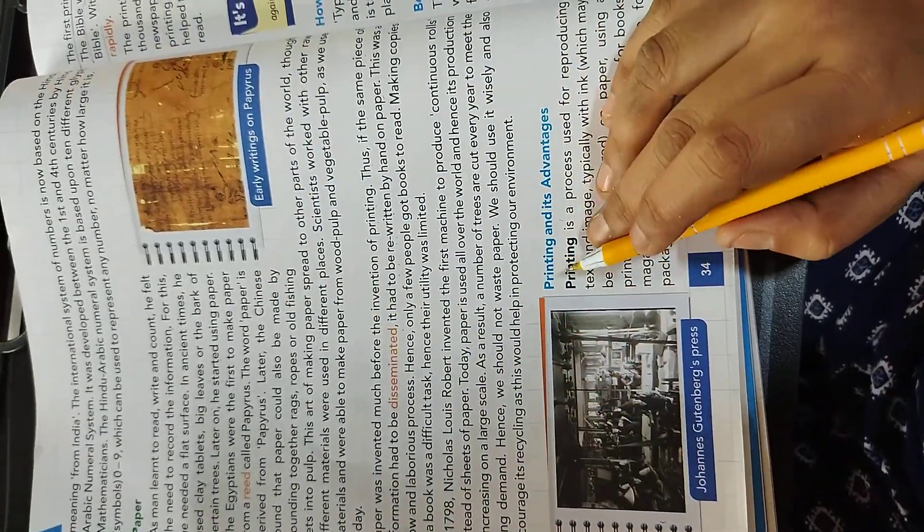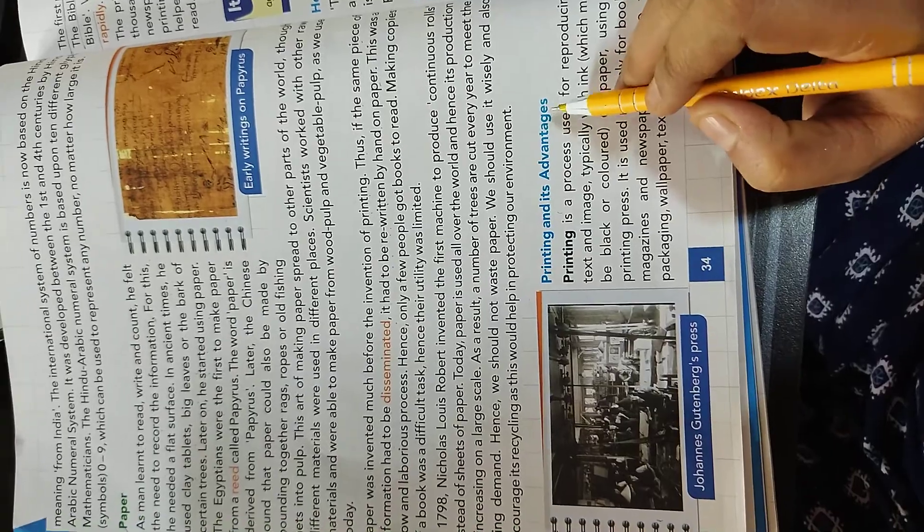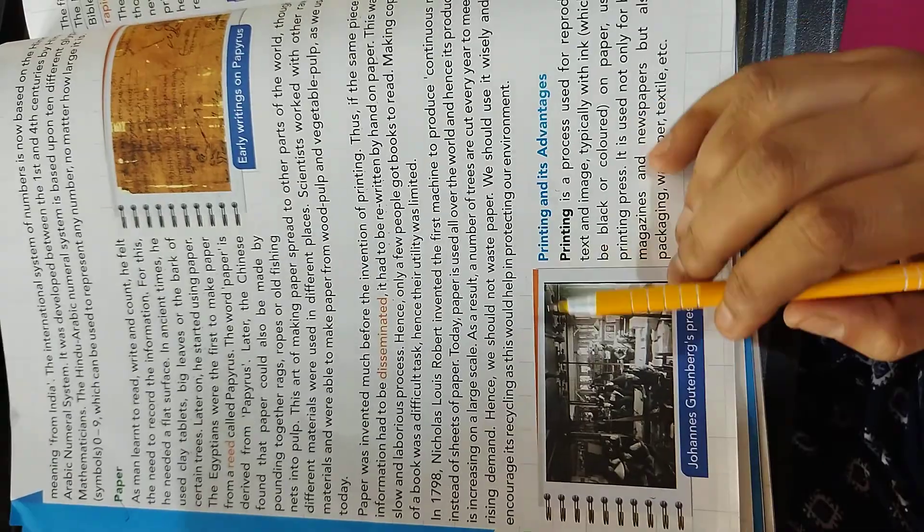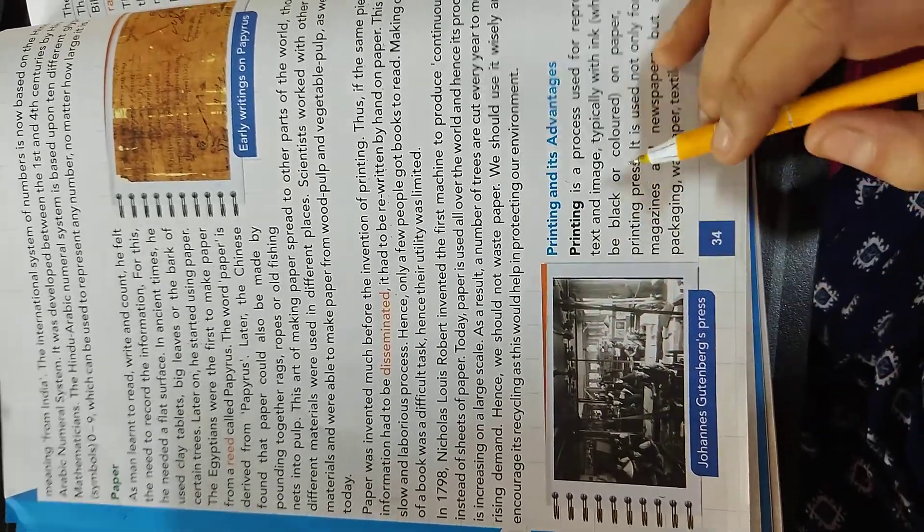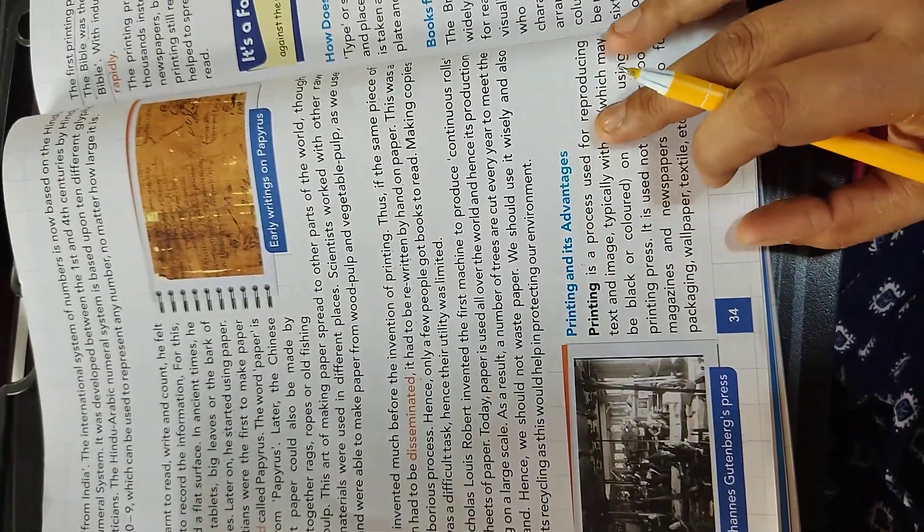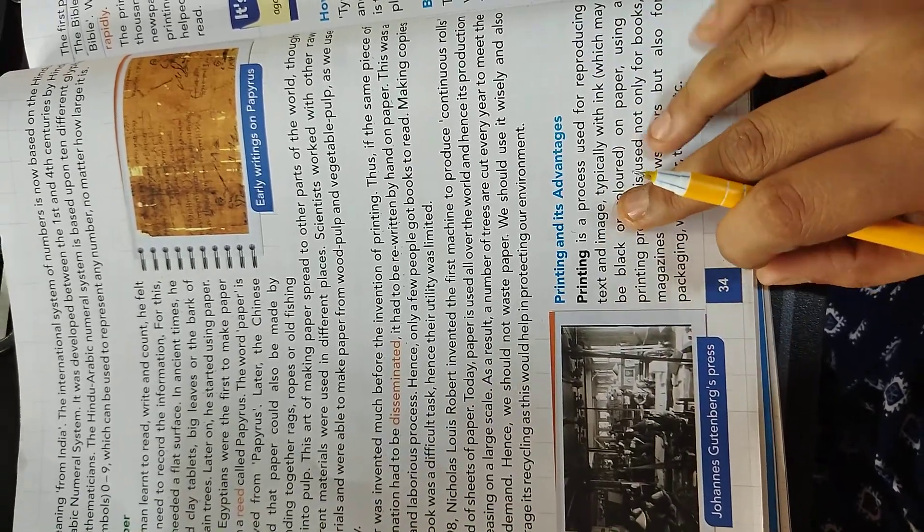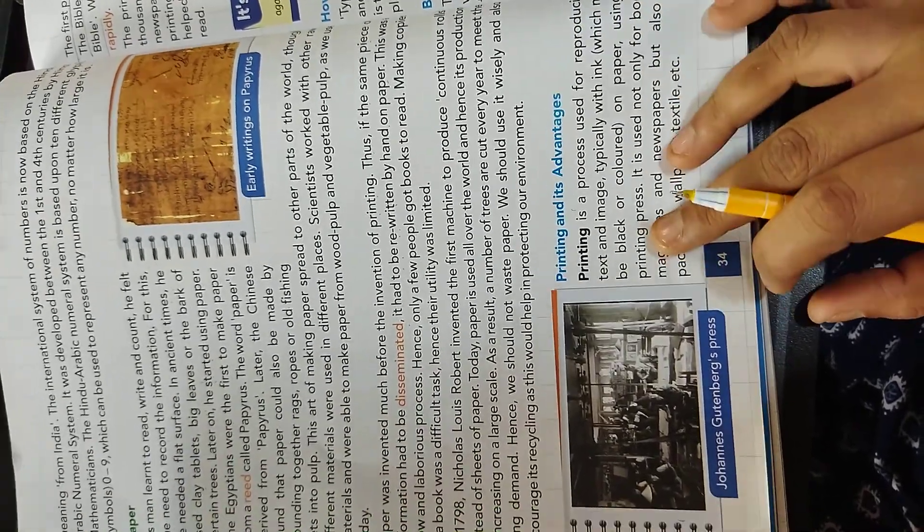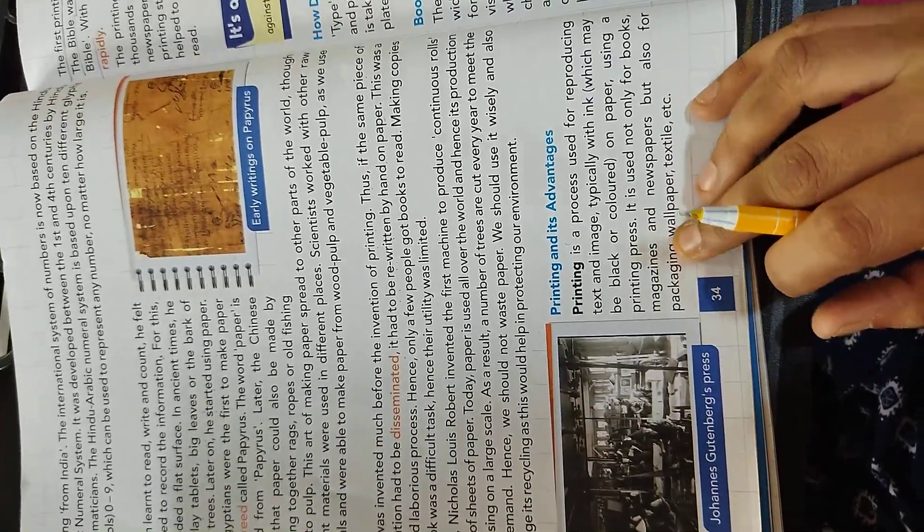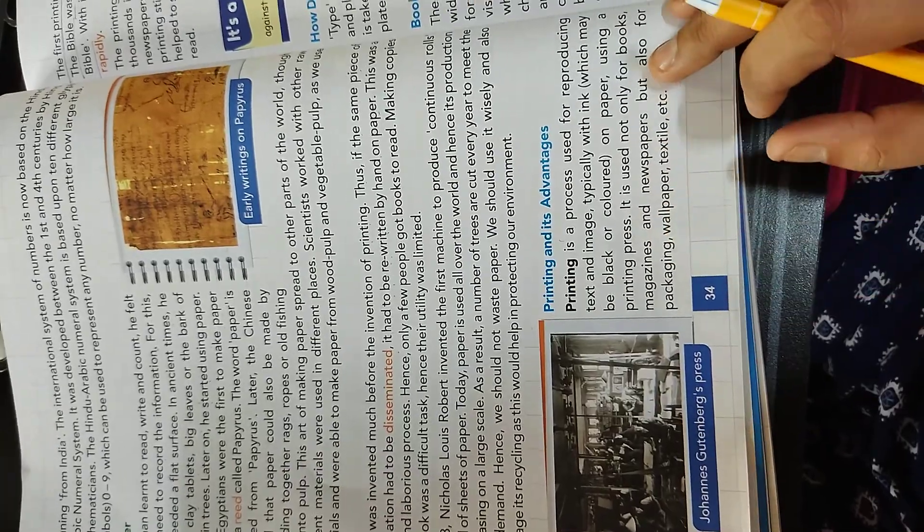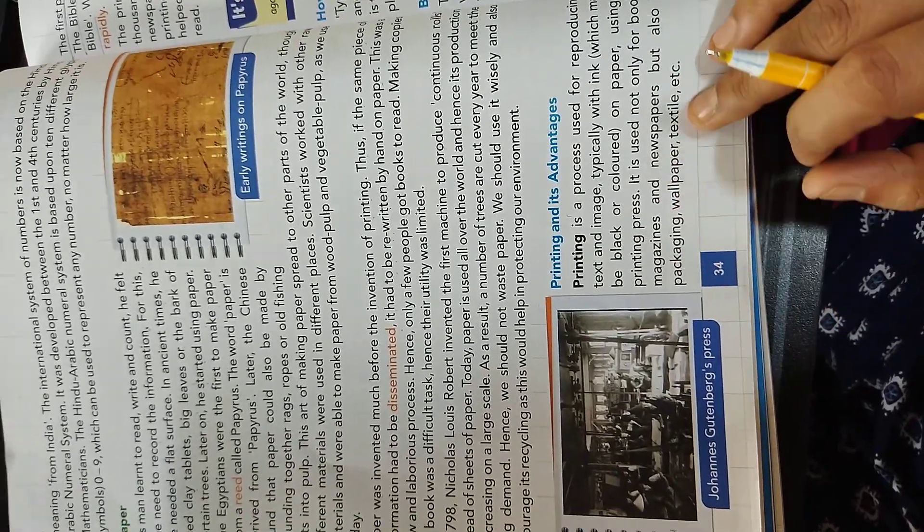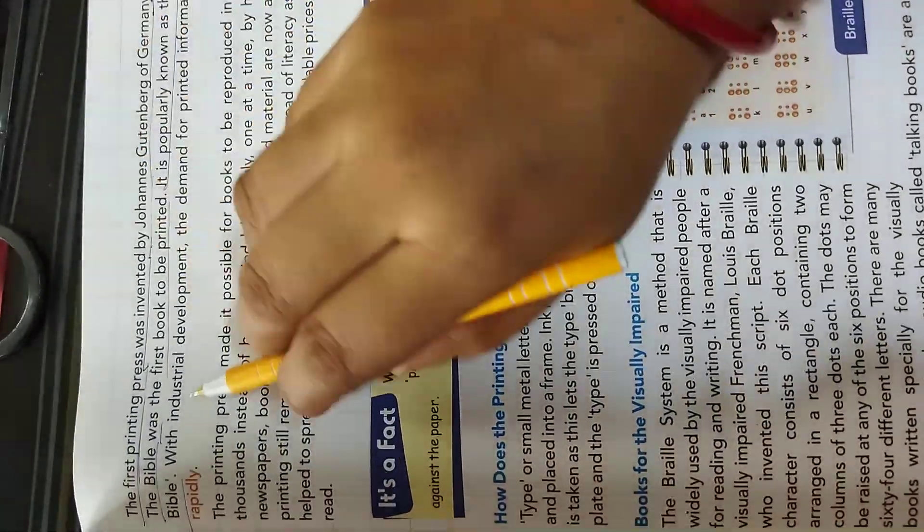Now, let's pick the next topic that is printing and its advantage. This is the picture of Johannes Gutenberg's press. Printing is process used for reproducing text and image, typically with ink, which may be black or colored on paper using a printing press. It is used not only for books, magazine and newspaper, but also for packaging, wallpaper, textile, etc.